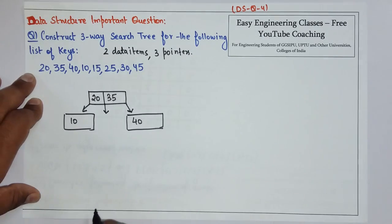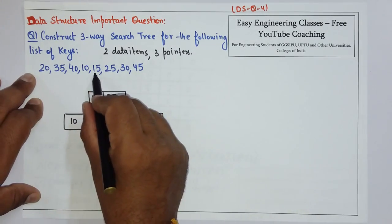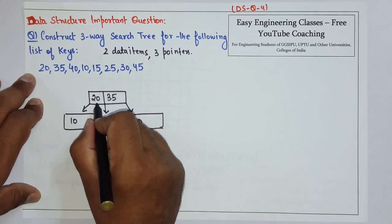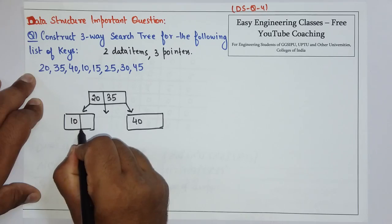Then comes 15. Since 15 is less than 20 but greater than 10, it will be on the right of 10.